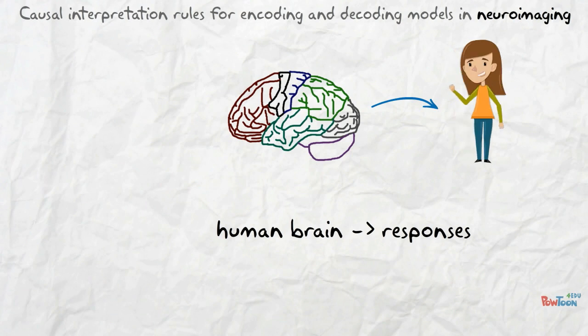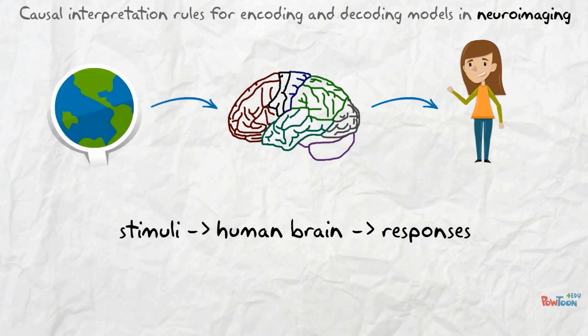Loosely speaking, in a stimulus-based paradigm, the brain activity after exposure to certain stimuli is measured, while in a response-based paradigm, the brain activity preceding certain responses is measured.